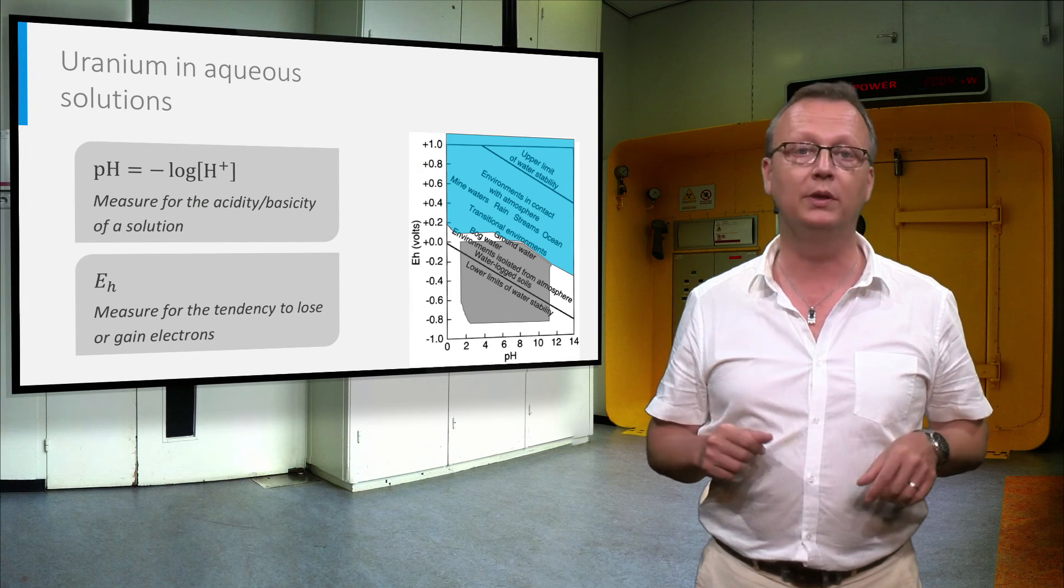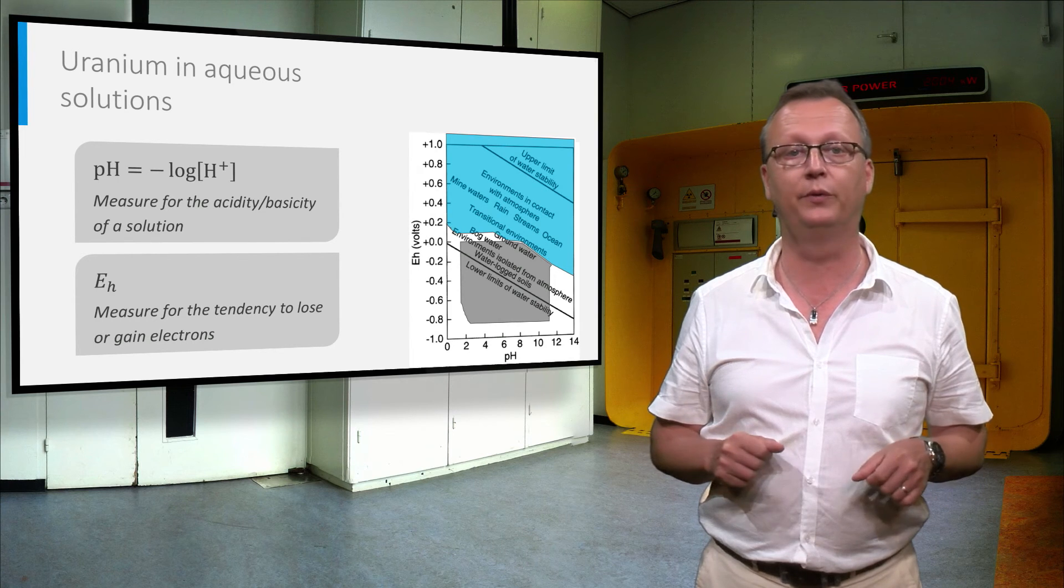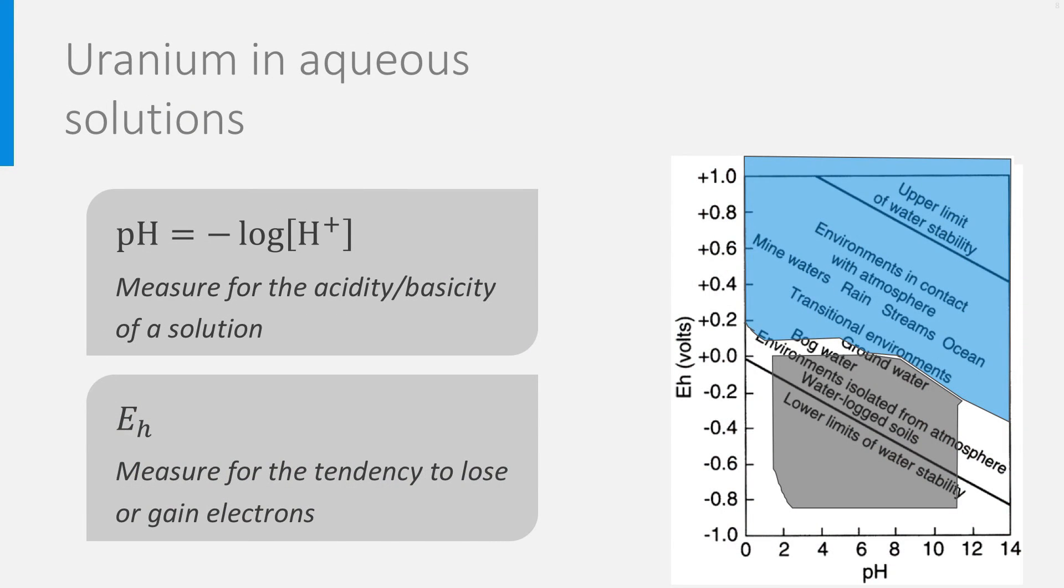As you can see now, in most of the waters on the surface of the earth, hexavalent is stable in solution. Uranium dioxide is only stable in water that are isolated from atmosphere.